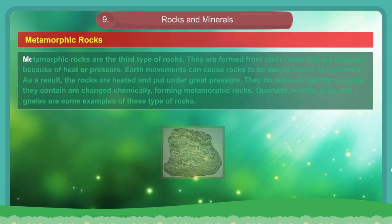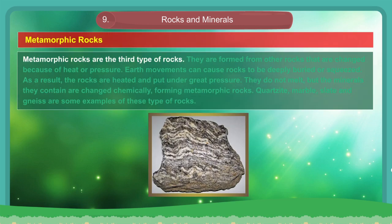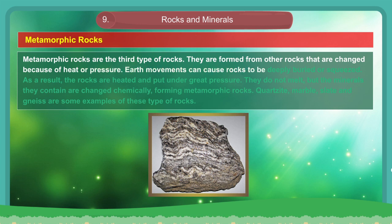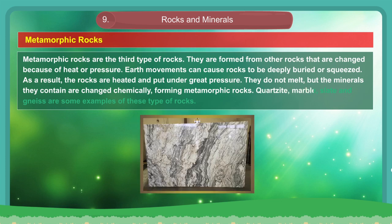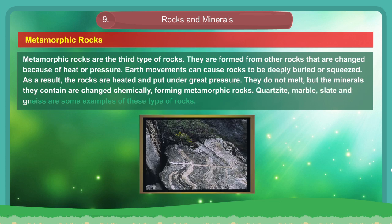Metamorphic Rocks. Metamorphic rocks are the third type of rocks. They are formed from other rocks that are changed because of heat or pressure. Earth movements can cause rocks to be deeply buried or squeezed. As a result, the rocks are heated and put under great pressure. They do not melt, but the minerals they contain are changed chemically, forming metamorphic rocks. Quartzite, marble, slate and gneiss are some examples of these types of rocks.